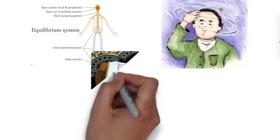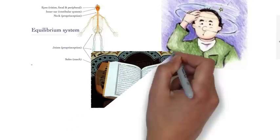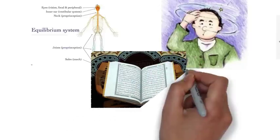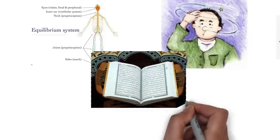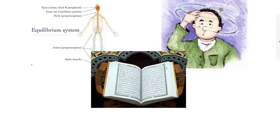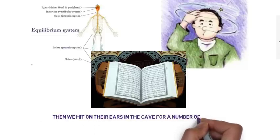More than 1400 years ago, the Holy Quran mentioned that the people who were in the cave had been knocked out by hitting their ears. Chapter 18, Verse 11: Then we hit on their ears in the cave for a number of years.